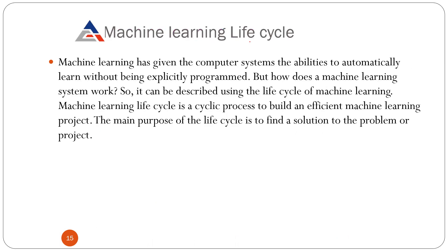We are done with certain applications of machine learning that you see and encounter every day without knowing why it is happening — machine learning is working behind it. Next, we are working on the machine learning life cycle: how you make your machine learn something, what are the steps that follow. Machine learning has given computer systems the ability to automatically learn without being explicitly programmed. How a machine learning system works can be described using the life cycle of machine learning.